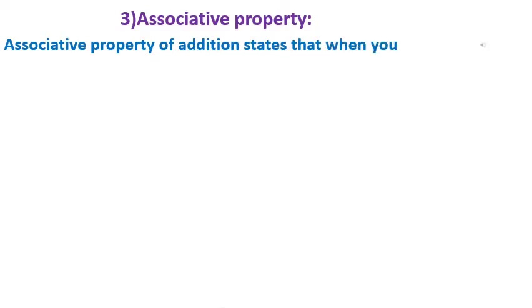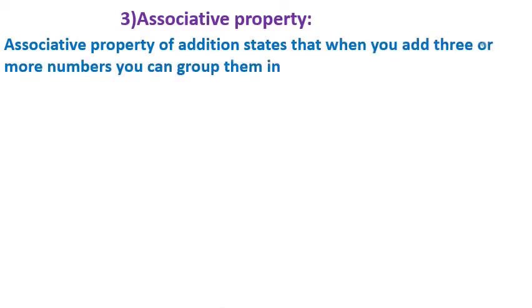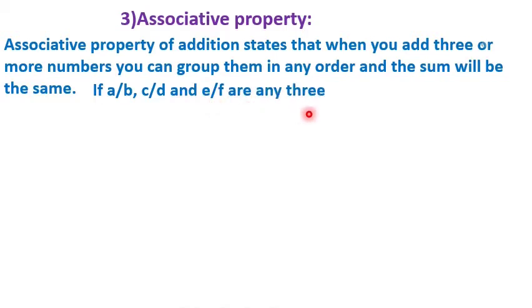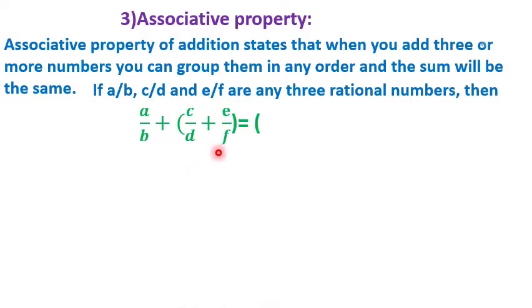Associative property. The associative property of addition states that when you add three or more numbers, you can group them in any order and the sum will be the same. If a/b, c/d, and e/f are any three rational numbers, then a/b plus (c/d plus e/f)...